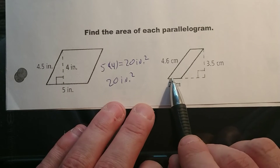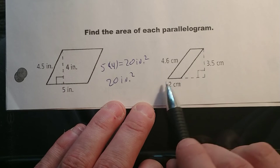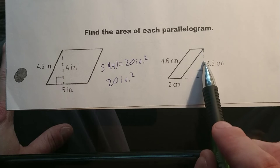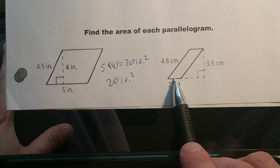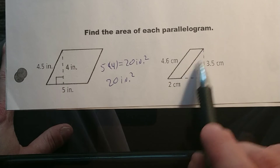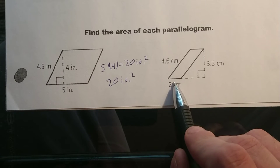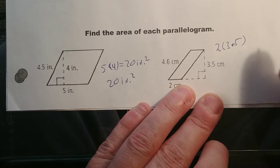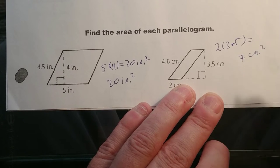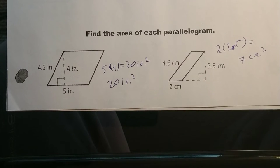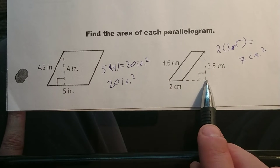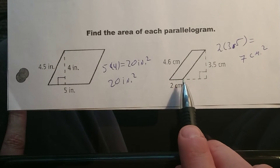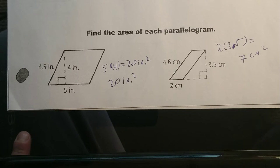For the next one it looks really awkward — like oh, it can't just be base times height because of this big gap. But this is still the base. When we drop our altitude, notice that it is perpendicular to the base. So to get the area of this slanted shape, all we do is base times height: 2 times 3.5. That gives us 7 centimeters squared. The base doesn't have to go all the way to where you're dropping the altitude — the base is just whatever you declare in the parallelogram.